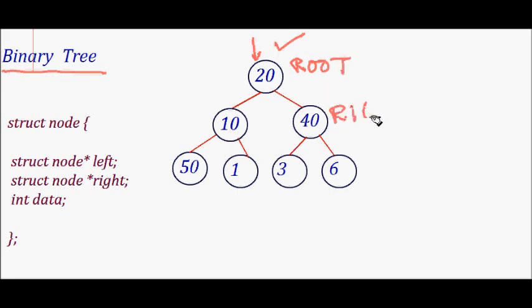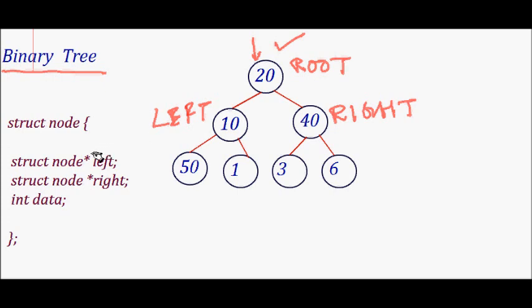Now how do we map this into C code? We have a struct node — a structure with three things: a pointer to the left child, a pointer to the right child, and the data stored in the node.